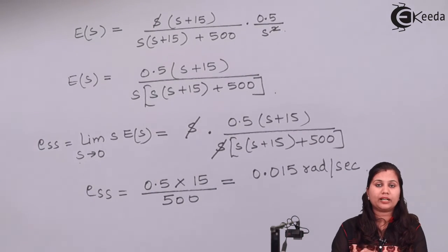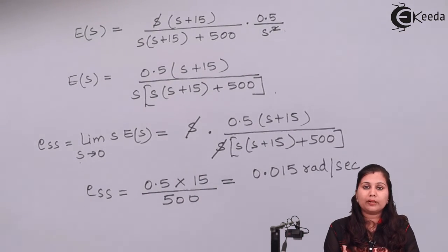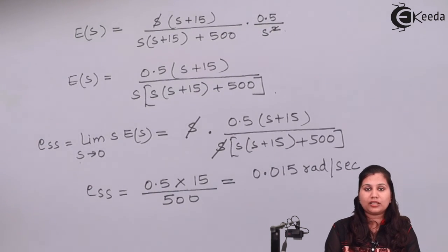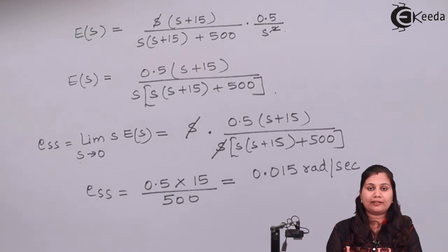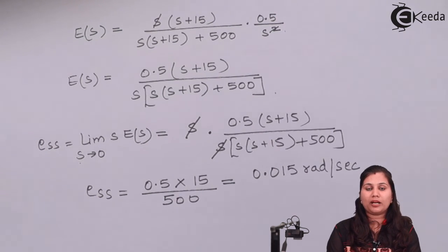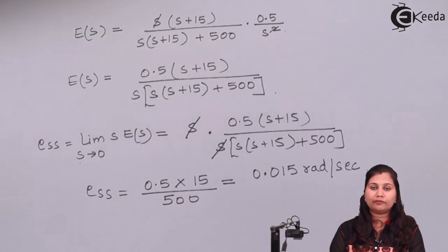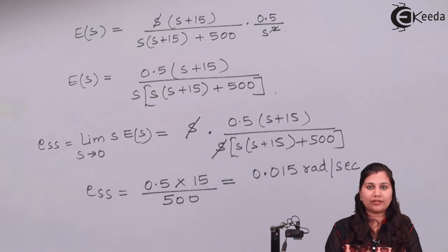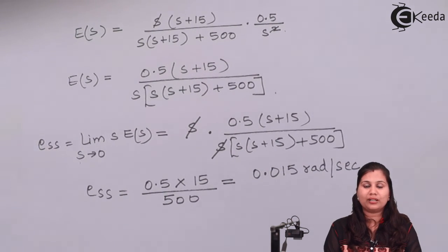In this problem, we were given the open loop transfer function for a second order control system with unity feedback, so H(S) = 1. We wrote the characteristic equation, compared it with the standard form to get the damping ratio and natural frequency, then used the formulas for the transient specifications to solve the problem. In this way we can find the time response or transient response specifications for a system when its open loop transfer function is given. I hope this problem is clear to you. Thank you.